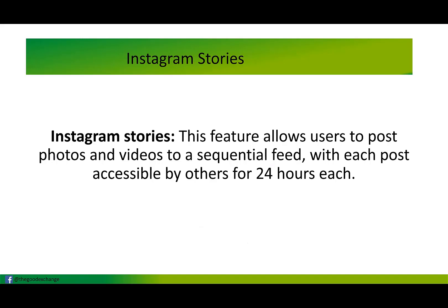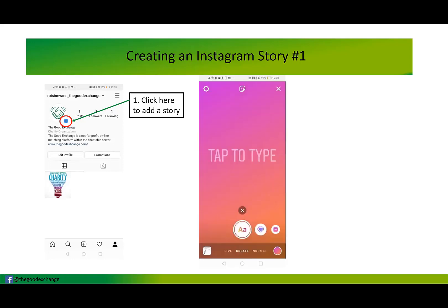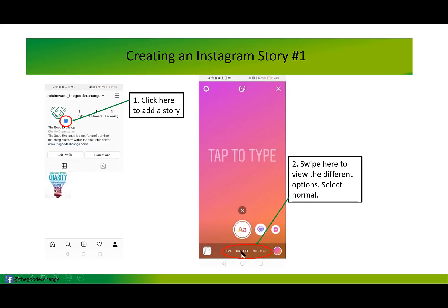Instagram Stories is a feature that allows users to post videos and photos in a sequential feed, with each post accessible by others for 24 hours. To create an Instagram Story, go to your account and click the little cross icon with the blue background, which takes you to the story creation page where you can swipe across to explore options.